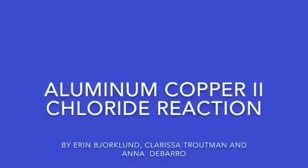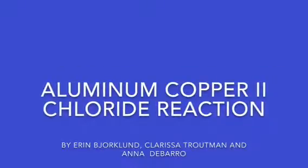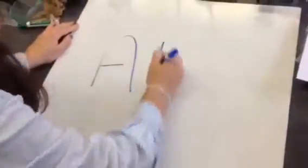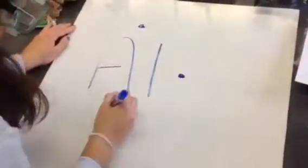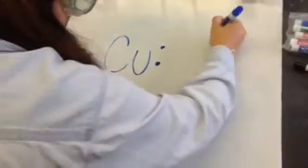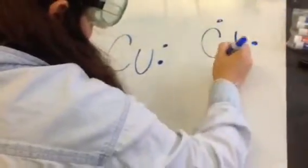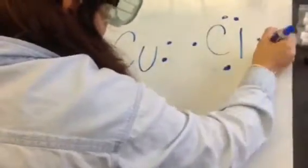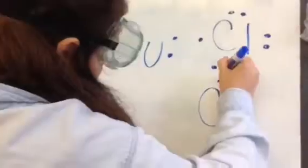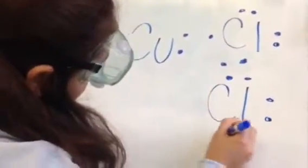We're observing the reaction between aluminum and copper chloride. Aluminum has three valence electrons. Copper's two valence electrons are transferred to the two chloride atoms that have seven valence electrons each. When the ionic bond is formed, both copper and chloride have complete octets. The end result is one copper for every two chloride.